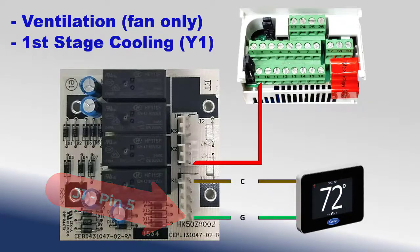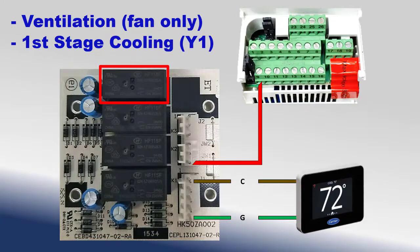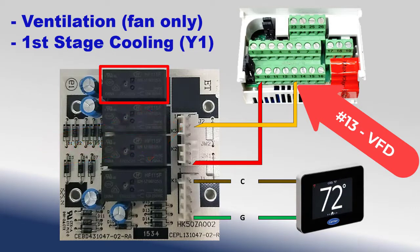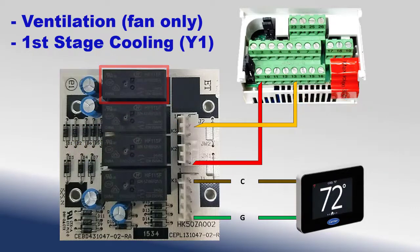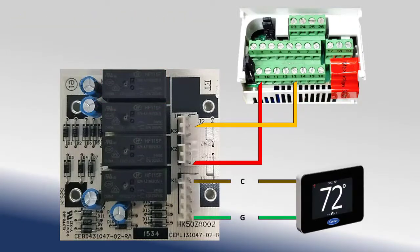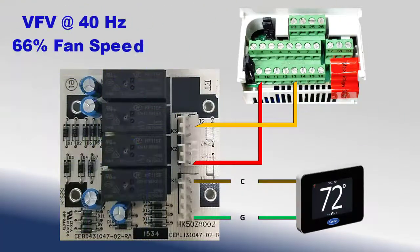This 24-volt AC signal closes relay K4. When the K4 relay is closed, the 24-volt DC signal from the J2 terminal pin 6 is closed to J2, pin 2, which is returned to the VFD at terminal 13. This input initiates a command for the VFD to come to 40 Hz, running the motor at 66% of fan speed.